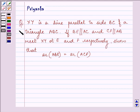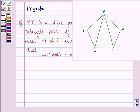Hi and how are you all today? The question says: XY is a line parallel to side BC of a triangle ABC. If BE is parallel to AC and CF is parallel to AB, meet XY at E and F respectively, show that area of triangle ABE is equal to area of triangle ACF.